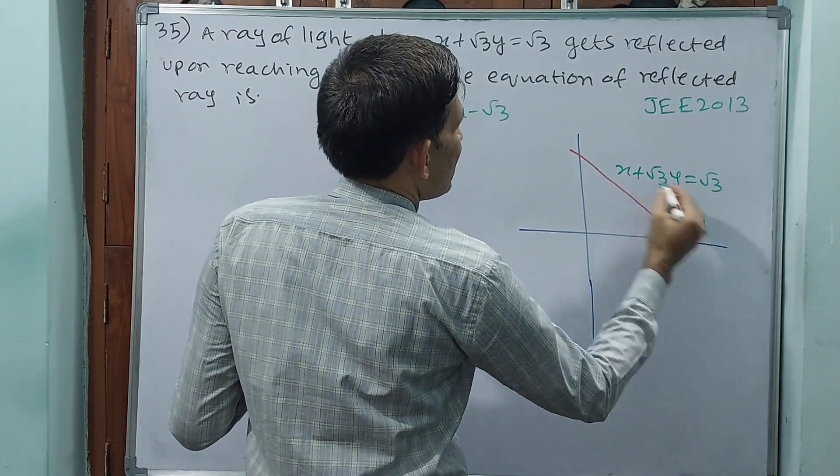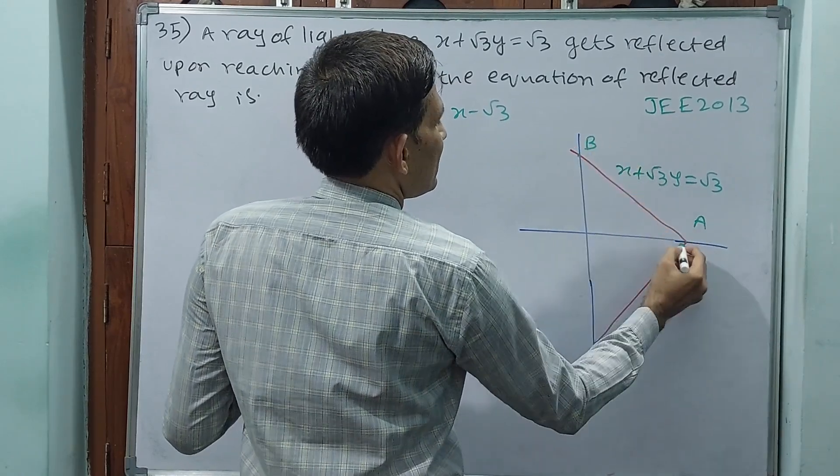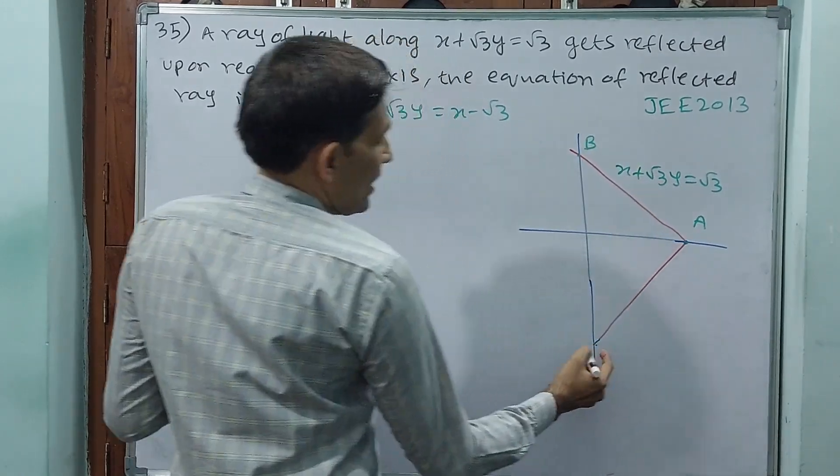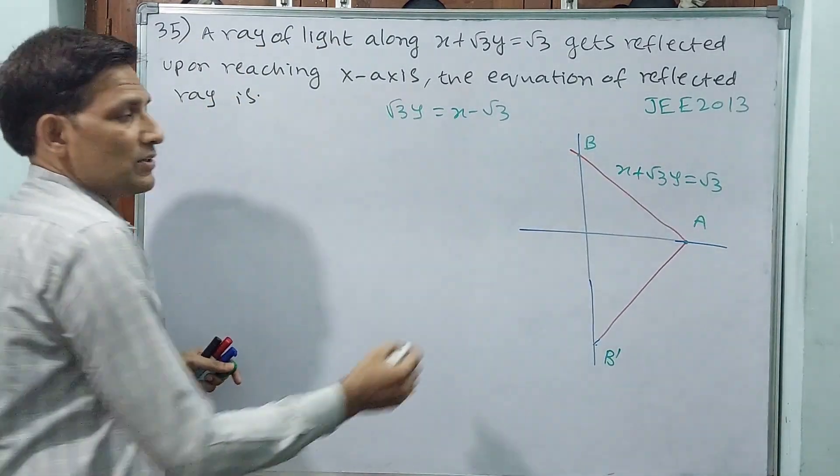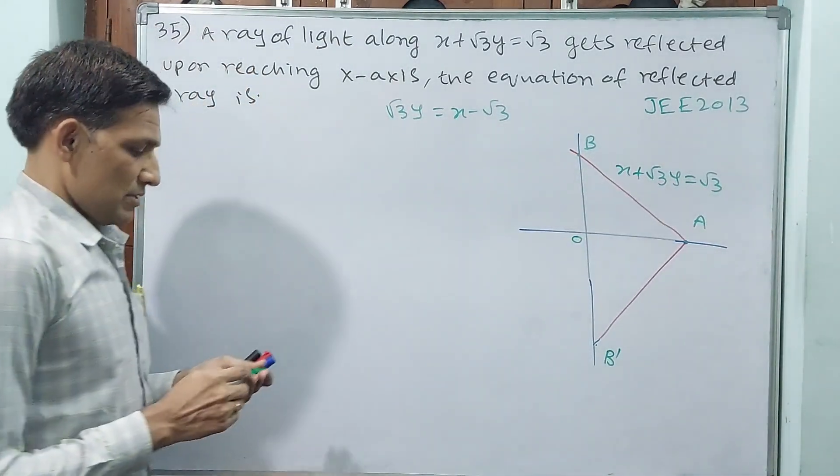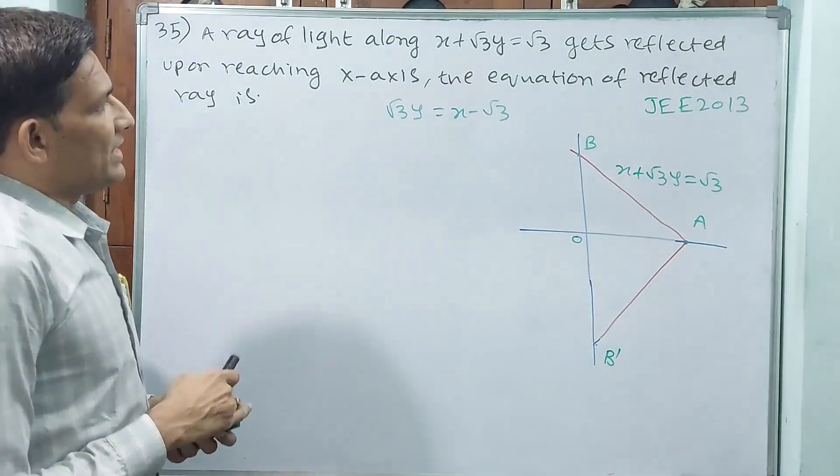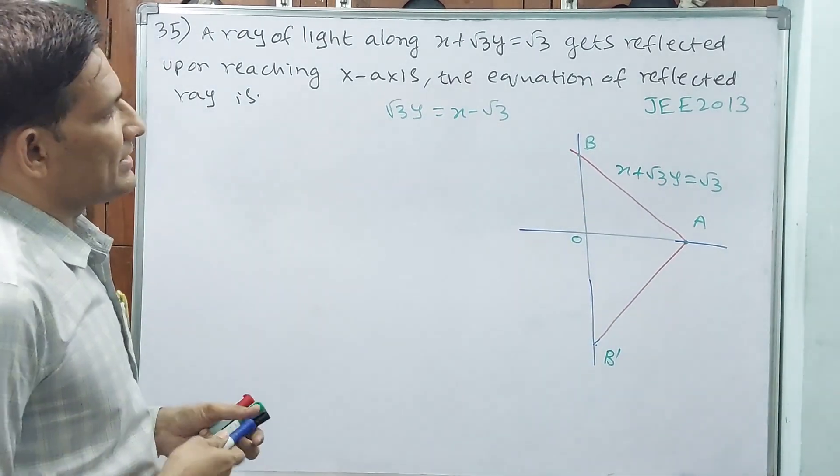This is point A, this is point B. And see, reflection means this is B dash, the image. B dash. Like that, how do you think? Then your answer will come.